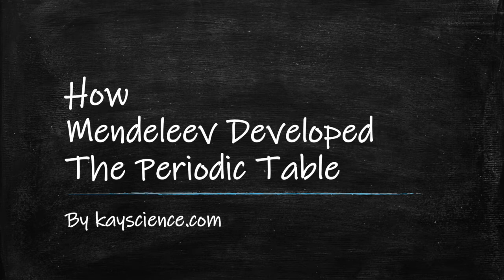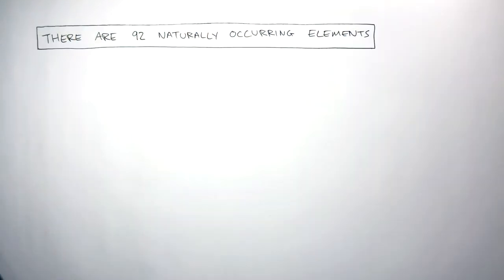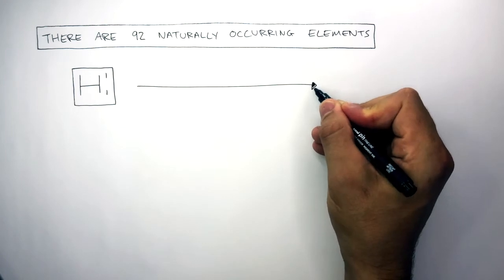How Mendeleev Developed the Periodic Table by kscience.com. There are 92 naturally occurring elements which start from hydrogen and go all the way up to uranium.